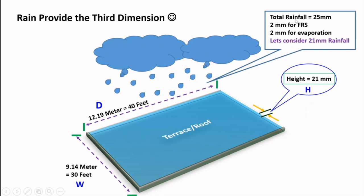I am considering 25 millimeter of rainfall. Here, 2 mm will go for the first rain separation, and 2 mm will get evaporated if terrace is hot. So let's consider 21 millimeter as rainfall, and I am considering 80% efficiency of the system.